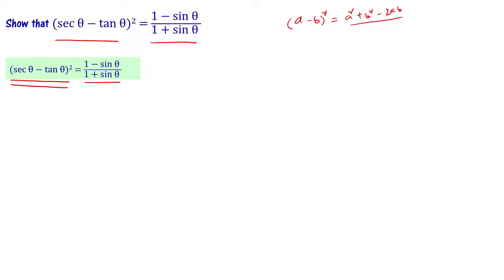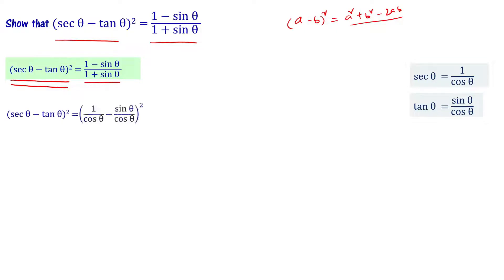Sec theta can be written as 1 by cos theta, and tan theta can be written as sin theta by cos theta. So sec theta minus tan theta whole square becomes 1 by cos theta minus sin theta by cos theta, whole square.